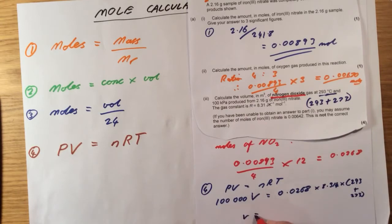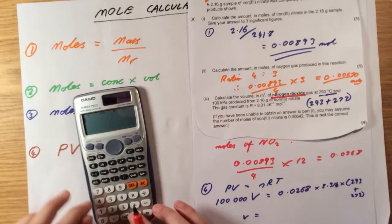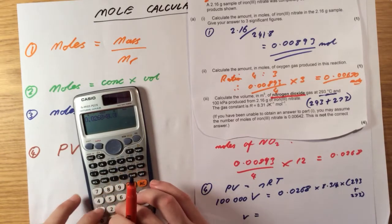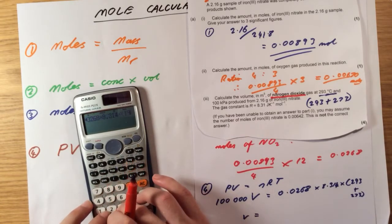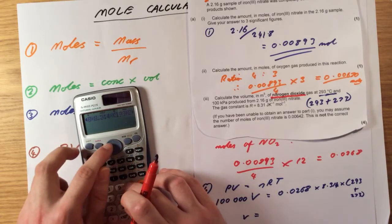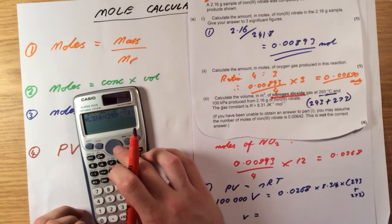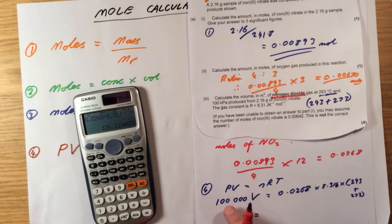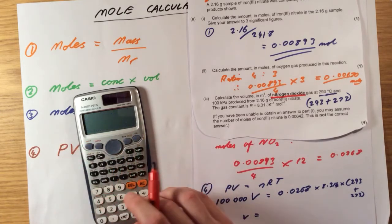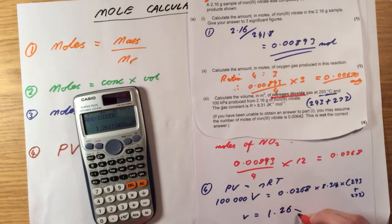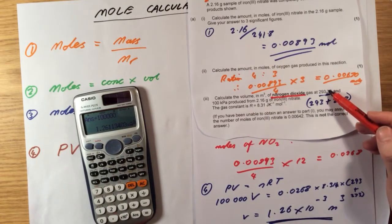If I work this through, 0.0268 times 8.314 times 293 plus 273. Making sure that I don't make a mistake in my calculator. Equals, since I've still got 100,000 on that side, I'm going to divide by 100,000. And this should give me an answer in metres cubed. Which gives me 1.26 times 10 to the minus 3 metres cubed. So four marks for that. Not horrendous, but make sure you remember to convert degree C to Kelvin. And that's it, really. That's the trick for that one.